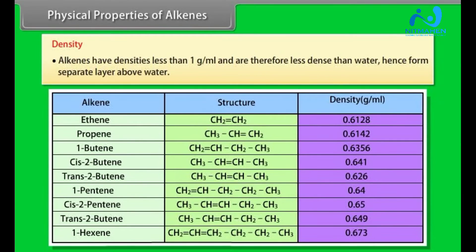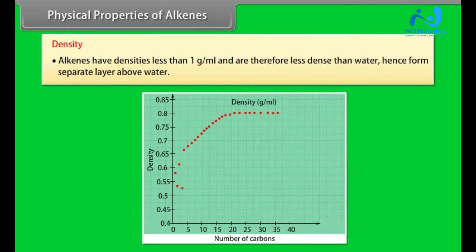Density: Alkenes have densities less than 1 gram per milliliter and are therefore less dense than water. Hence, form separate layer above water. As the molecular mass of alkenes increases, density increases.